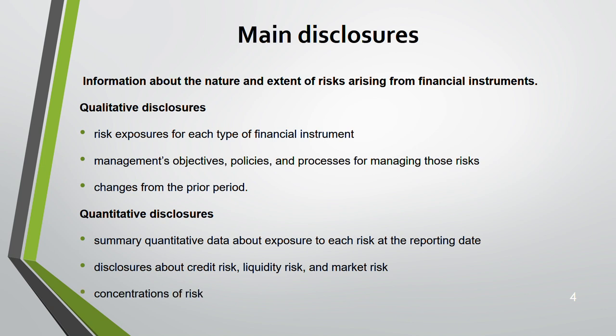That's it - IFRS 7 is a very small standard. But before we summarize, let's consider: why are there three separate standards dealing only with financial instruments? The reason is that financial instruments are very complex products. It is often difficult for users to understand how they work and how risky they are. Because they are very risky and complex, it is easy for preparers to manipulate them.